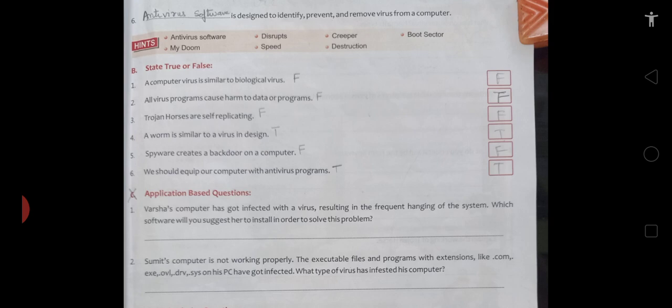Then the next question is children, true and false. A computer virus is similar to biological virus. It is false. A computer virus is a set of programs. Then second is: all virus programs cause harm to the data or program. So this is false.